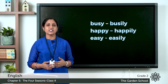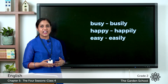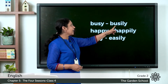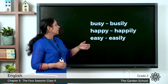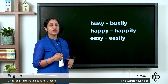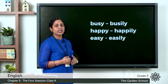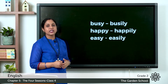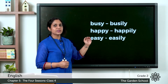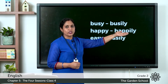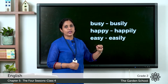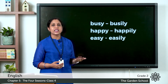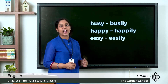For a word which ends with the letter Y, when we add -LY, we have to omit the Y and instead use -ILY. For example, the word busy — B-U-S-Y — becomes busily: B-U-S-I-L-Y. Happy ends with Y and becomes happily: H-A-P-P-I-L-Y. Easy also ends with Y and becomes easily — we omit the Y and add I.